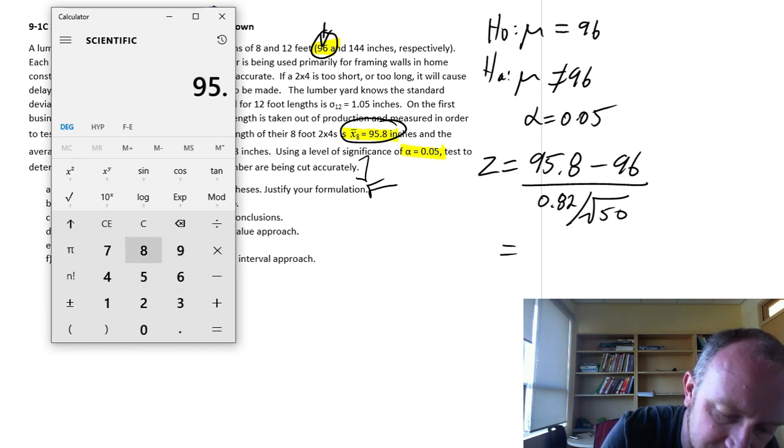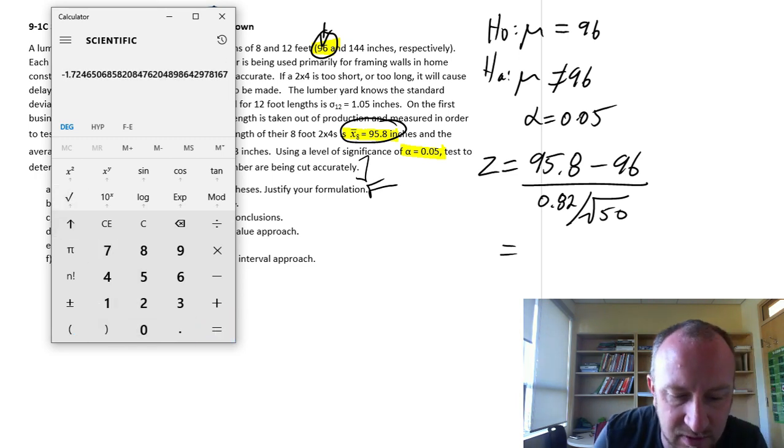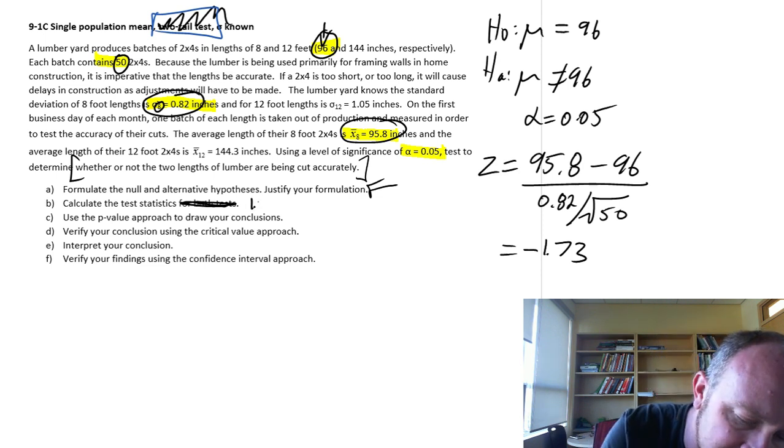So 95.8 minus 96, divided by 0.82 over root 50, equals negative 1.70. That'll round to 73. Negative 1.73. Okay, so there we've got that test statistic.